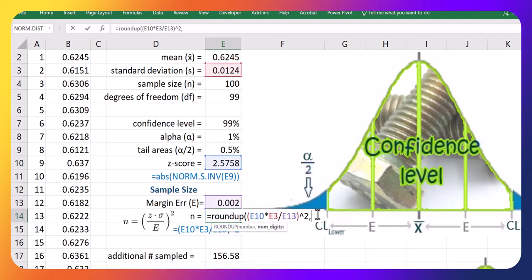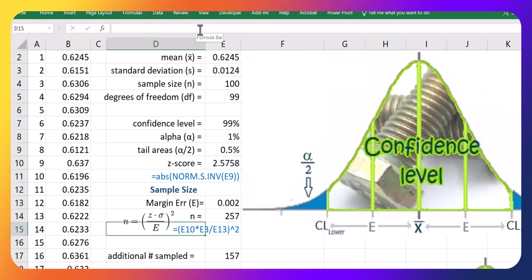You could just do this manually as well. Roundup. And I'm going to take that whole statement, comma, zero. I'm going to round n up to the next whole number. Let me just comment that out as well.